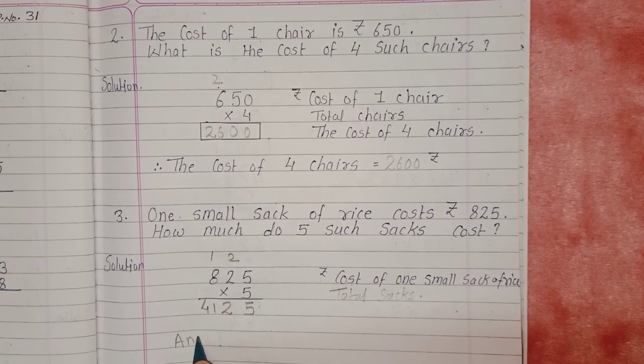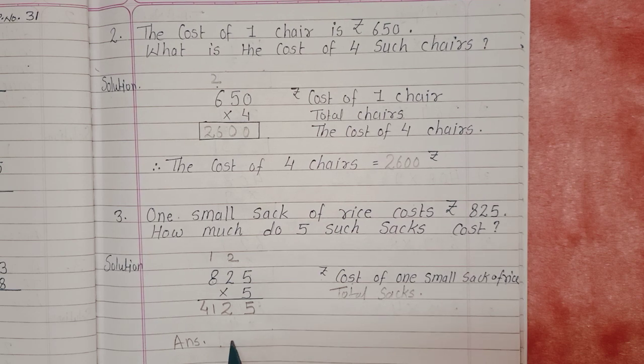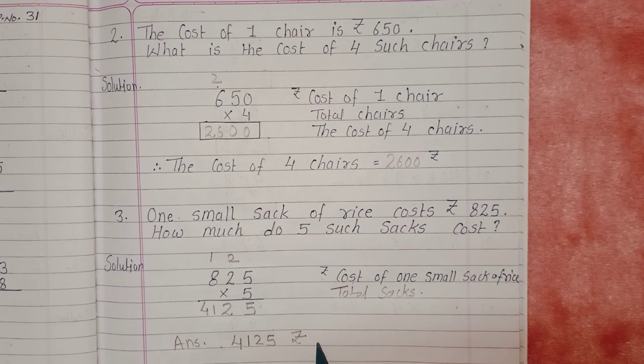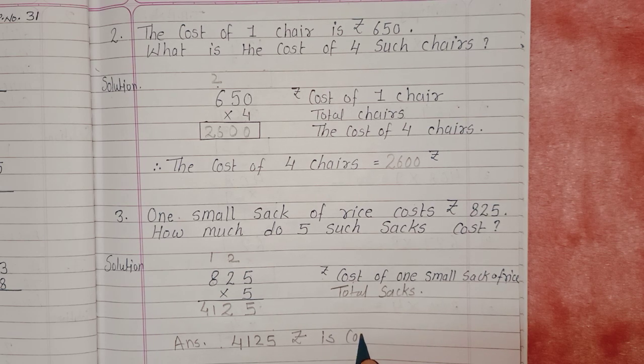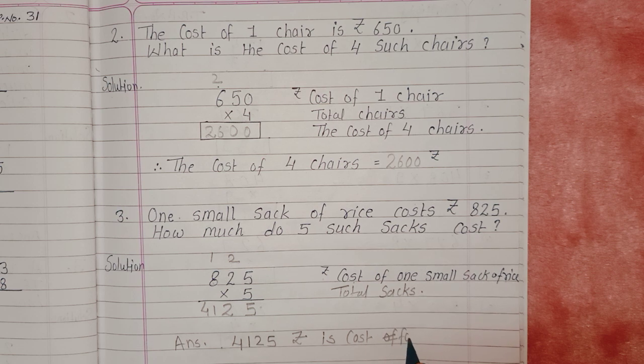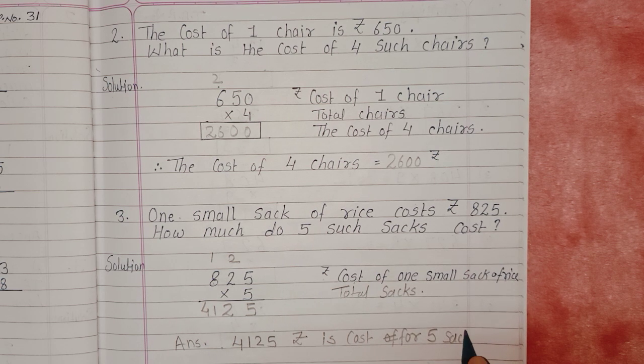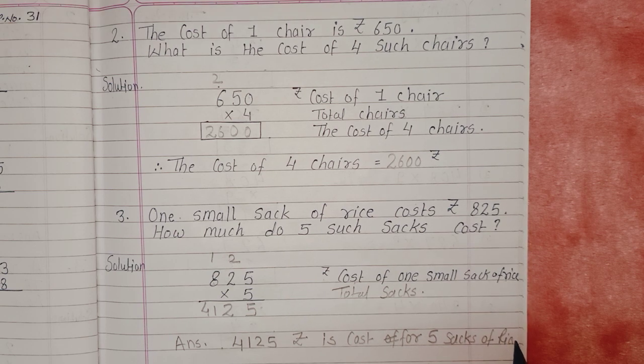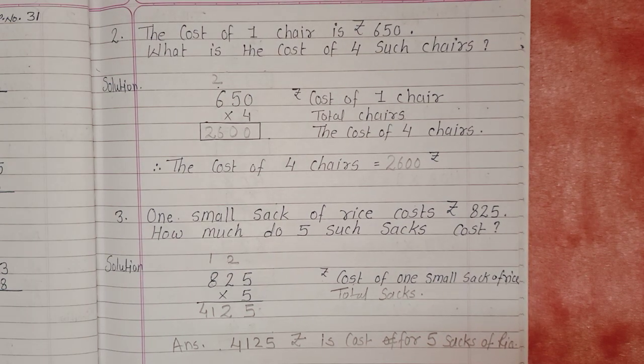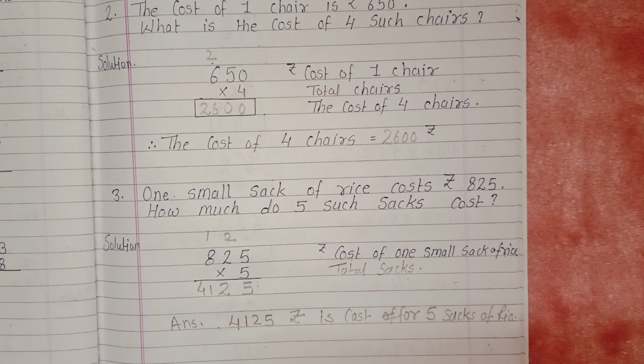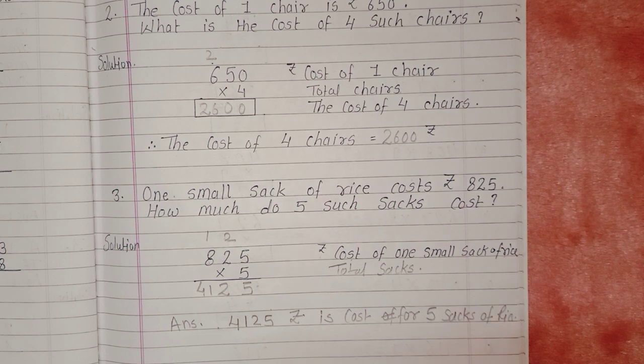Now we'll write the answer. We'll write the answer statement here. Rs. 4,125 is the cost for 5 sacks of rice. So this is our solution for word problem question number 3. With this, children, today we have completed all questions for page number 30. Thank you.